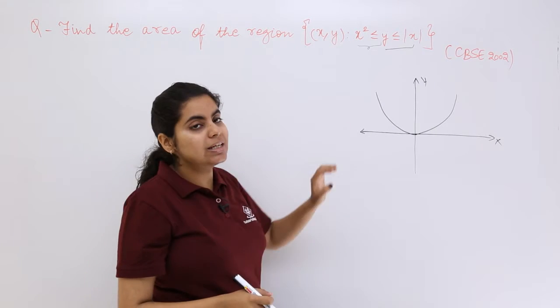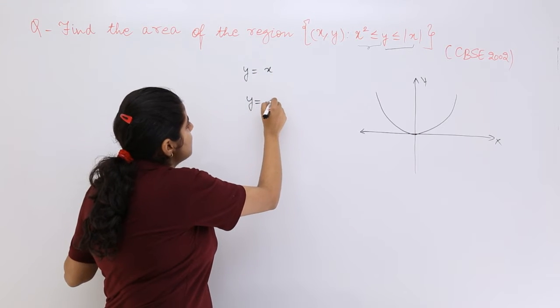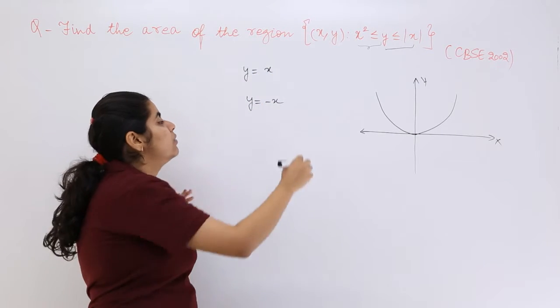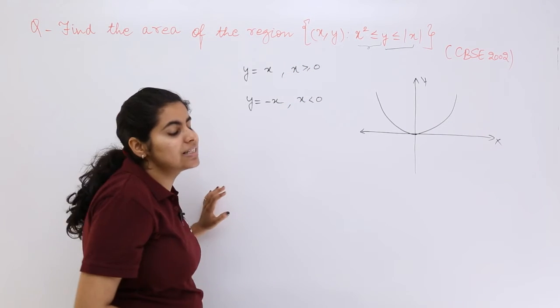Now this modulus can break in a manner like it can break as x and it can break as -x. So when y = x would be when x ≥ 0, this would be when x < 0.